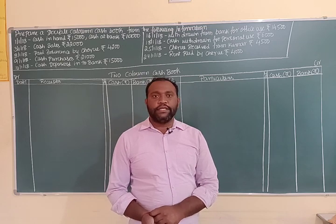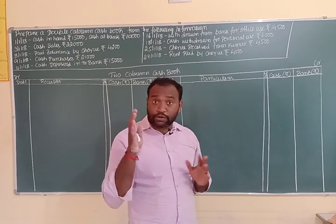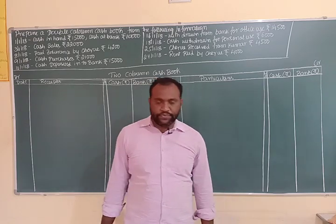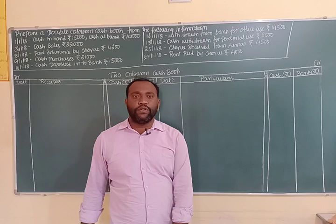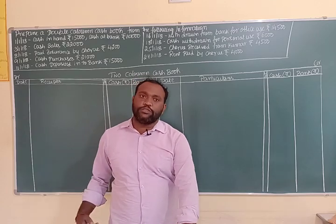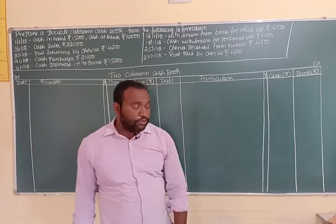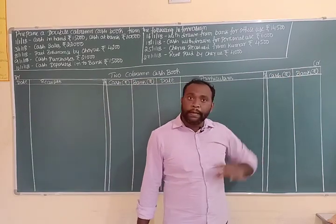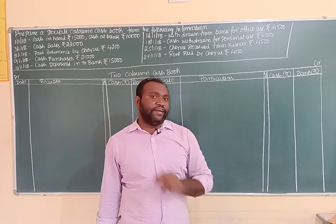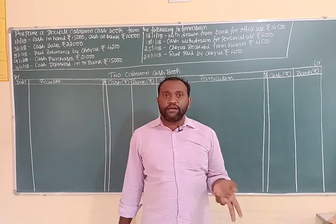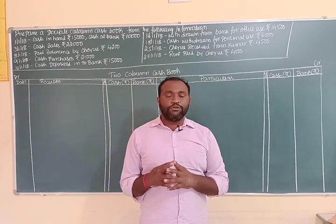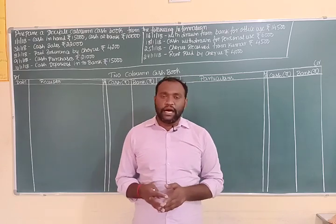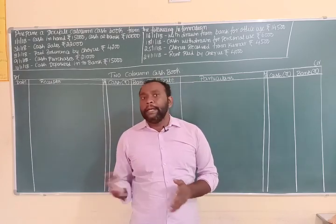What I am going to discuss today is important for the compulsory question. Here we are discussing about the two column cash book, which includes a cash column and a bank column. Here contra entries will come.